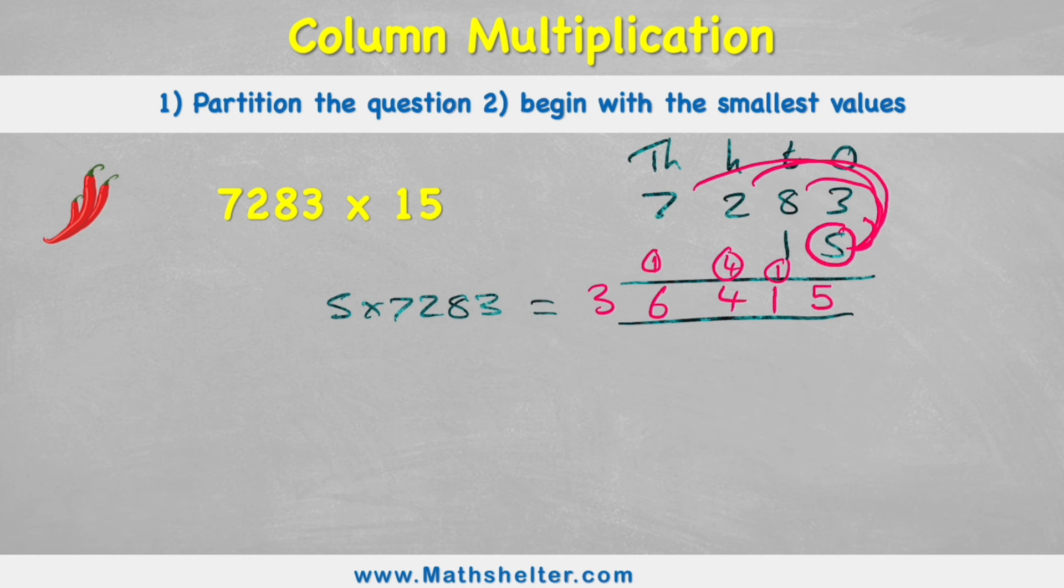Now let's multiply the 10. And again, I'm going to respect the fact that it's a 10 by making the answer 10 times larger by putting in my placeholder. Now I can just do 1 times 3, which is 3, 1 times 8, which is 8, 1 times 2, which is 2, and 1 times 7, which is 7. So this question here has just answered 10 times 7,283.